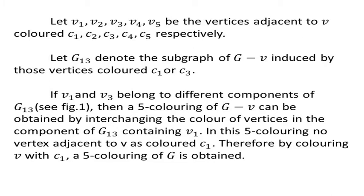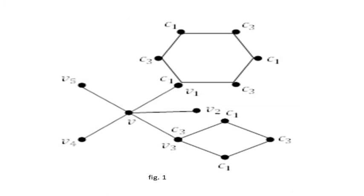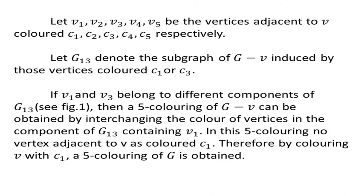Suppose V1 and V3 belong to different components of G13 (see figure 1). Then the five-coloring of G minus V can be modified by interchanging the colors: assigning color C3 to all vertices colored C1 in the component of G13 containing V1. Note that the edges incident on V are already removed. In this new five-coloring, no vertex adjacent to V is colored C1. Therefore, by coloring V with C1, a five-coloring of G is obtained, and we can extend the coloring of G minus V to the full graph G.